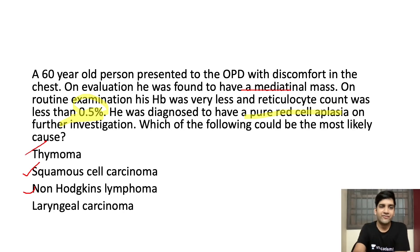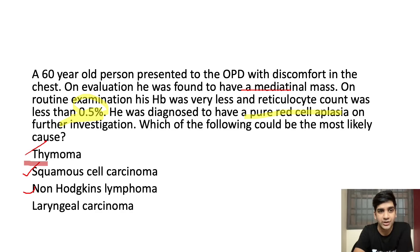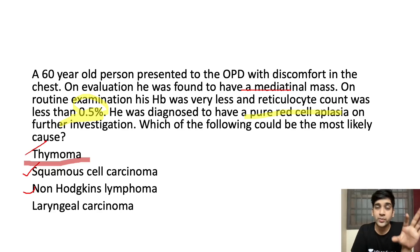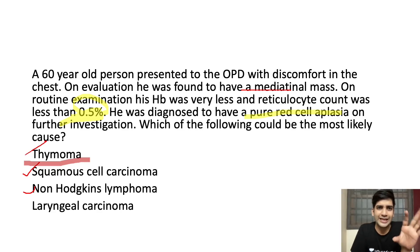With this information — a mediastinal mass plus pure red cell aplasia as a paraneoplastic syndrome — the only tumor that can cause pure red cell aplasia as a paraneoplastic syndrome is thymoma. So the answer here is thymoma, not squamous cell carcinoma and not non-Hodgkin's lymphoma. The answer is thymoma.